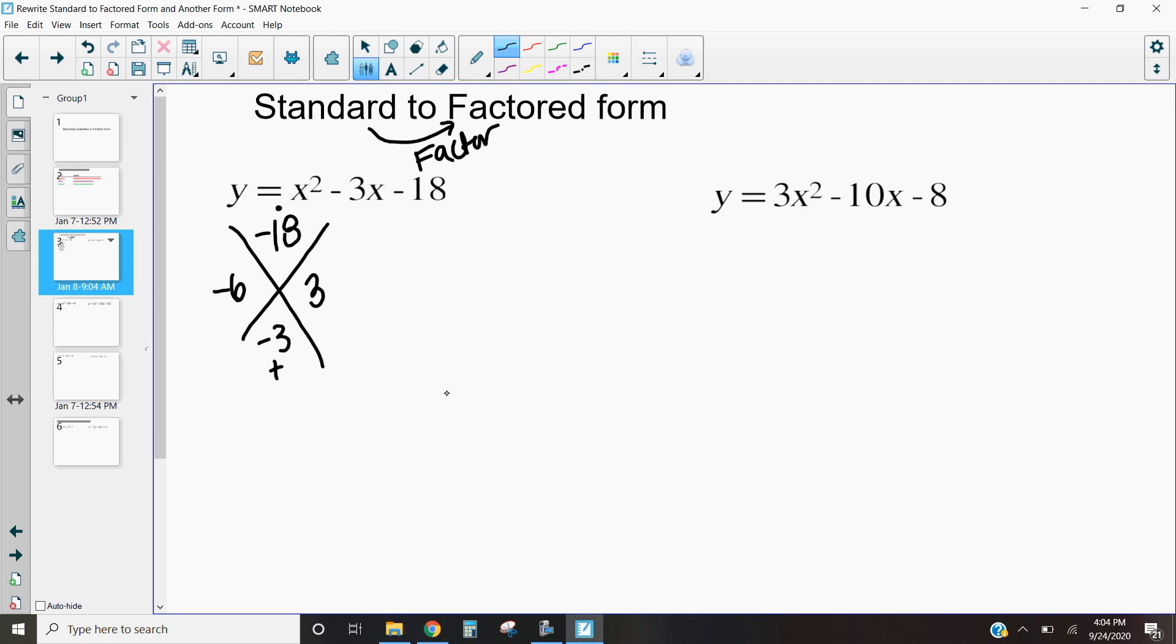So then when we're writing this out in factored form, what I'm going to do is put my y equals x minus 6 and x plus 3. It's just as simple as that. We are just going to factor our polynomials and move forward.